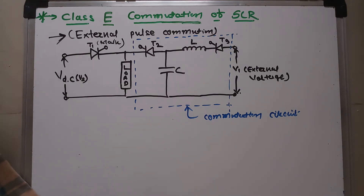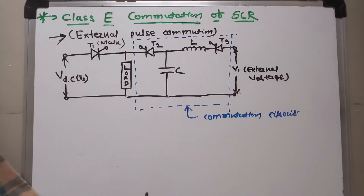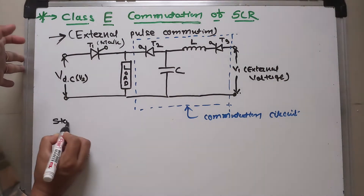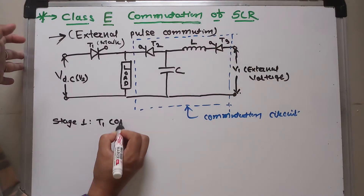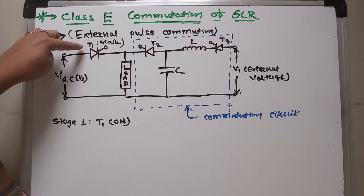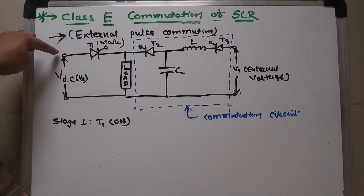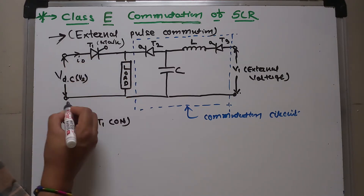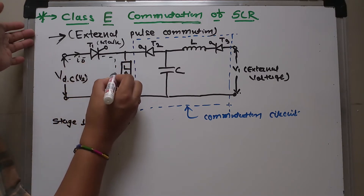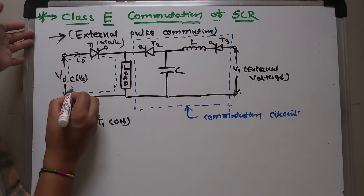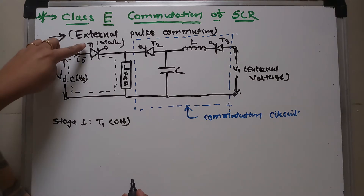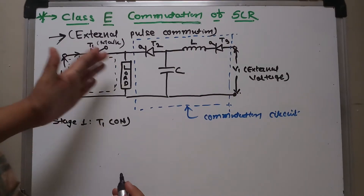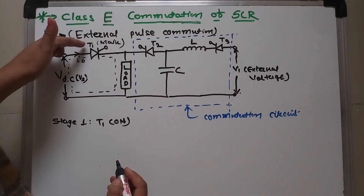Now let us see the working of Class E commutation step by step. In Stage 1, the main thyristor T1 is turned on by applying a gate pulse. At that time, load current I0 starts to flow from source to load through thyristor T1. If you want to turn off thyristor T1, what will happen next?